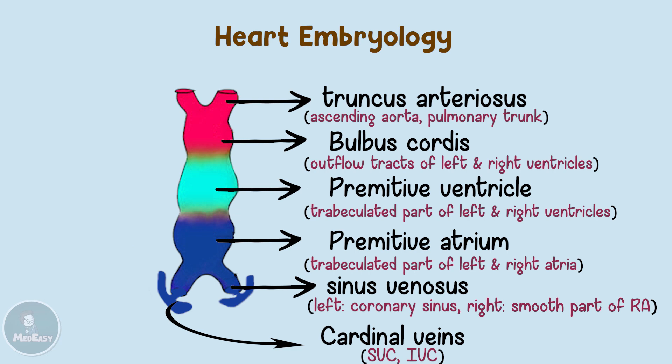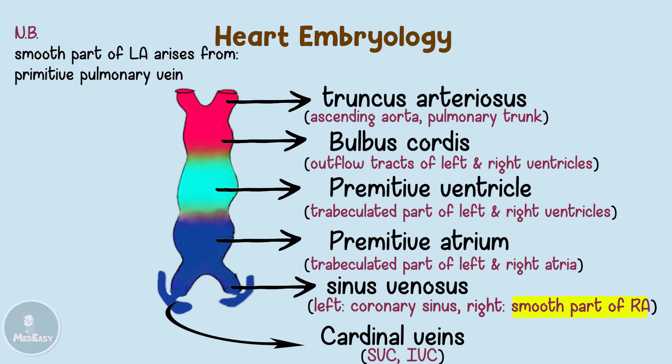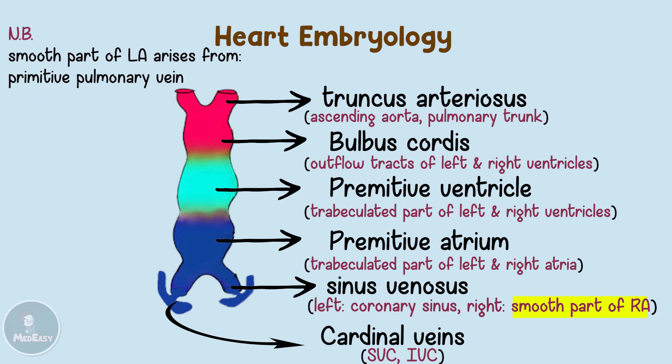The endocardial cushion also gives rise to all the valves — the semilunar ones and the atrioventricular ones. As for the smooth part of the left atrium, it will arise from the primitive pulmonary vein.